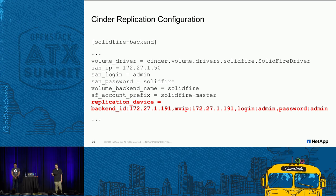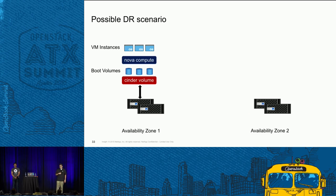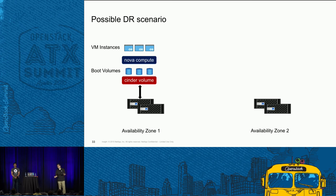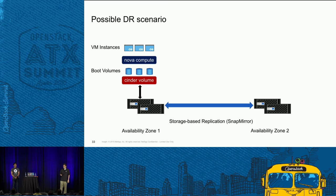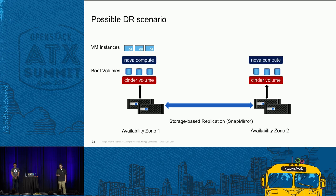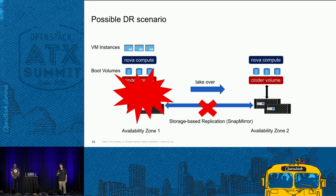In a disaster scenario, to minimize downtime you use storage-side replication. Your compute nodes have tenant VMs with boot volumes on a storage backend such as NetApp. Using storage-side replication — SnapMirror in the case of Cluster Data ONTAP — data is replicated to a storage device in a second availability zone where Nova and Cinder run in hot standby. If a disaster occurs, you break the replication relationship and bring up your VMs in the second availability zone.